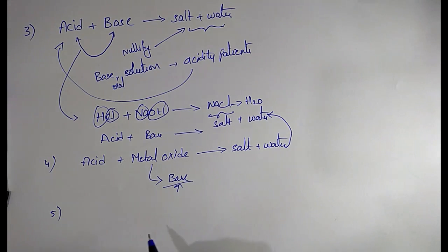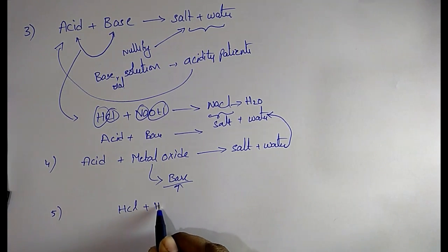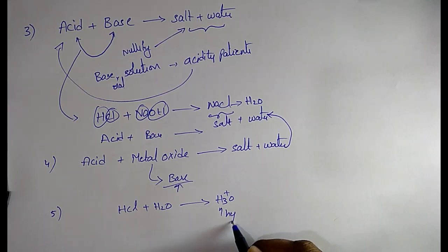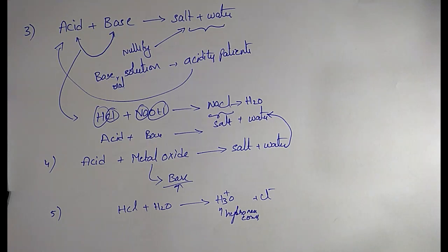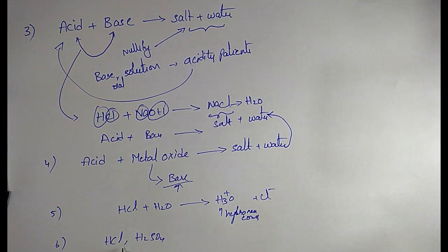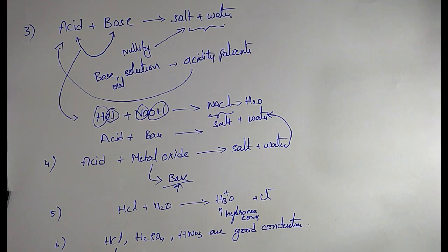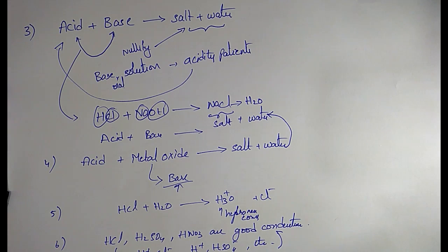Whenever acid combines with water, we get hydronium ions and chloride ions. Acids like HCl, H2SO4 (hydrochloric acid, sulfuric acid), and nitric acid act as good conductors of electricity because they can ionize as H⁺Cl⁻ or H⁺HSO4⁻. So they are good conductors of electricity.